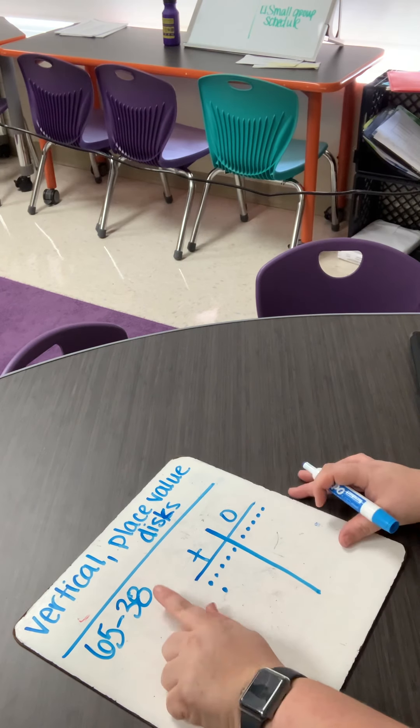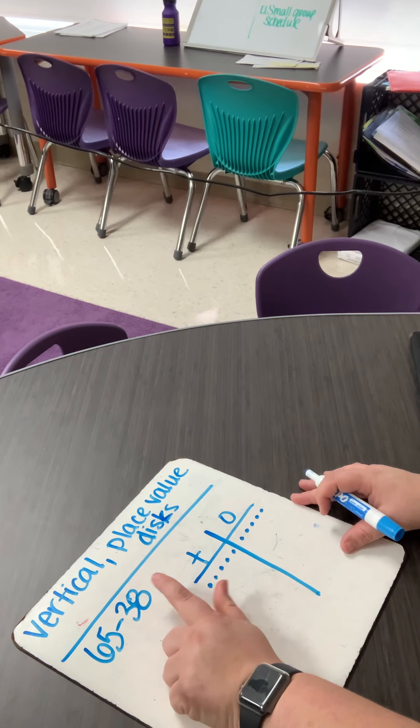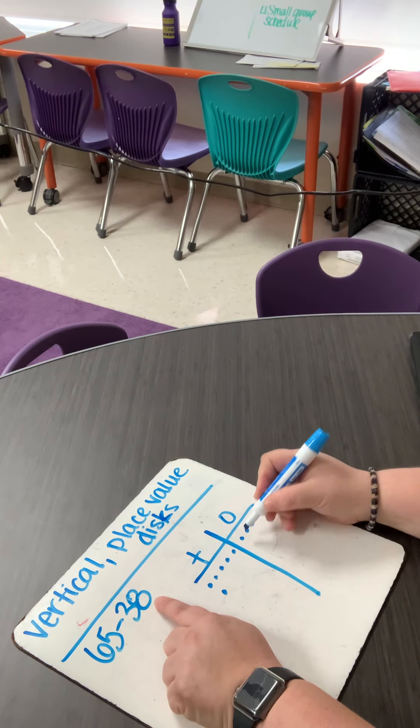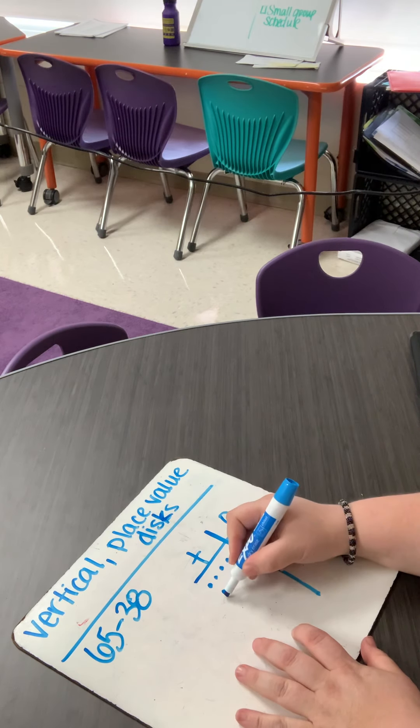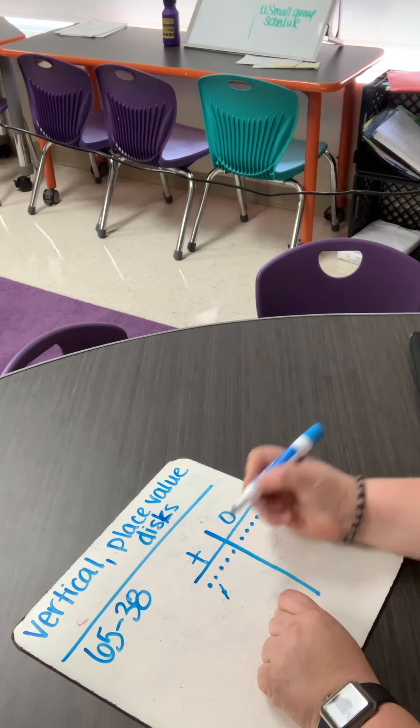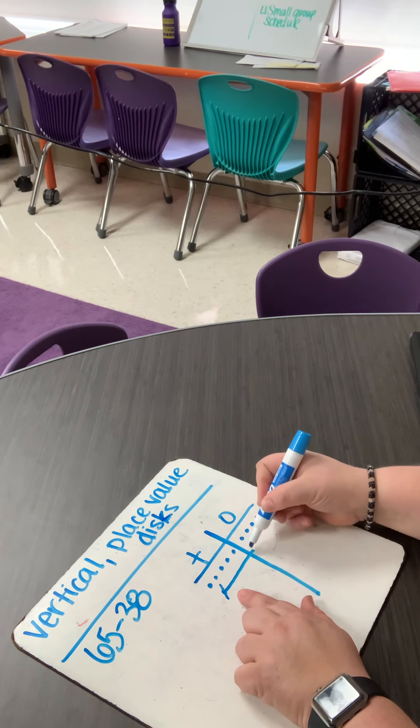So now we look at our ones place. This one says I need to take away eight. Well, one, two, three, four, five. I don't have enough. So what I have to do now is go over to the tens place and regroup. So I take one away from the tens and I move it over.